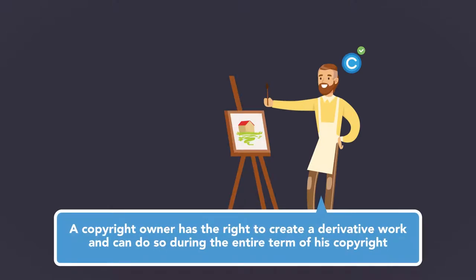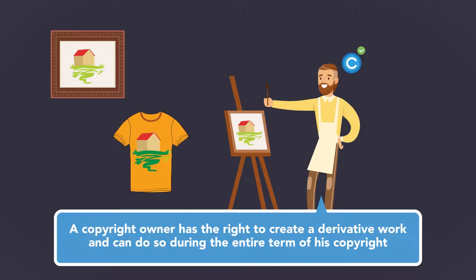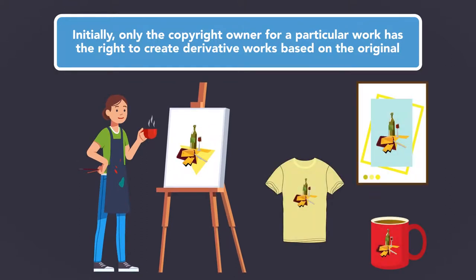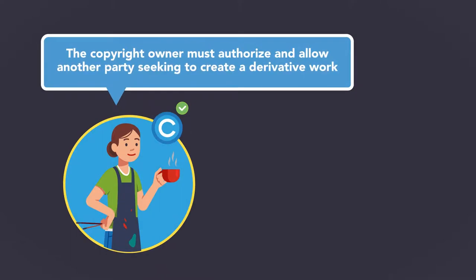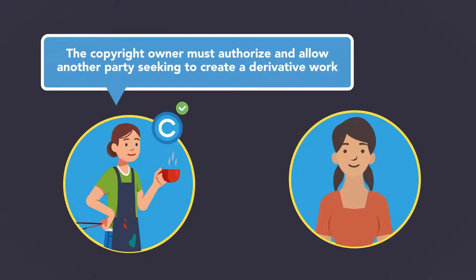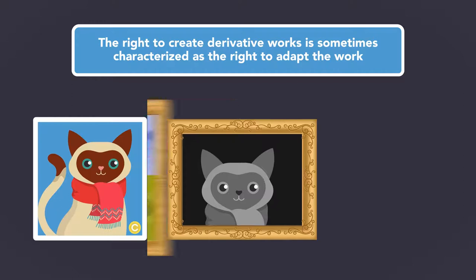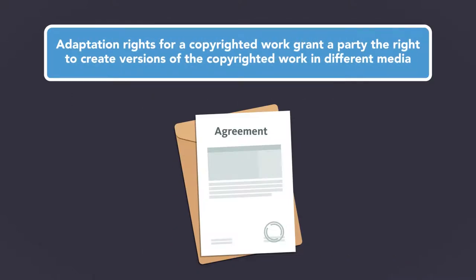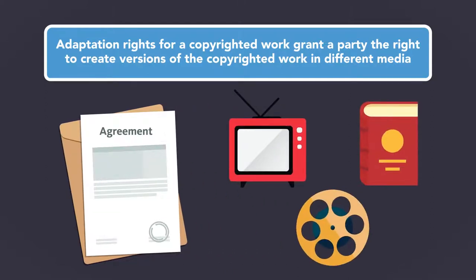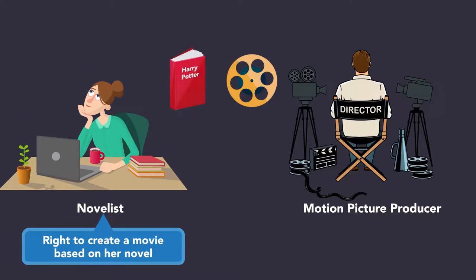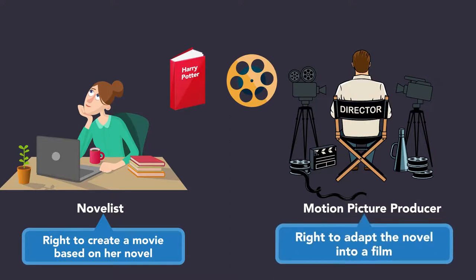A copyright owner has the right to create a derivative work and can do so during the entire term of his copyright. While initially only the copyright owner for a particular work has the right to create derivative works based on the original, the copyright owner must authorize and allow another party seeking to create a derivative work. The right to create derivative works is sometimes characterized as the right to adapt the work. Adaptation rights grant a party the right to create versions of the copyrighted work in different media. For example, a novelist may grant a motion picture producer the right to create a movie based on her novel, granting the producer the right to adapt the novel into a film.